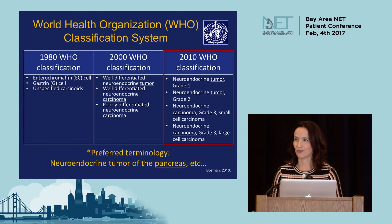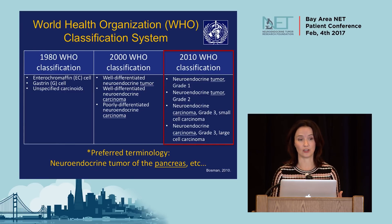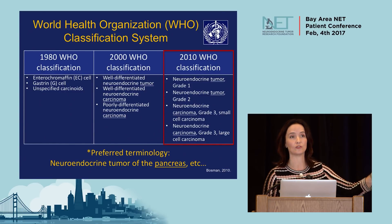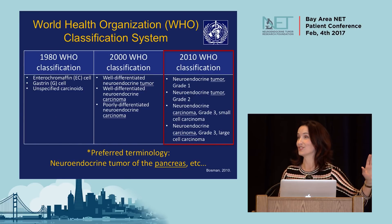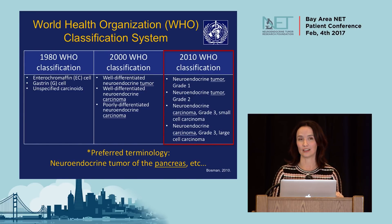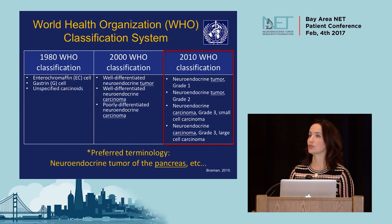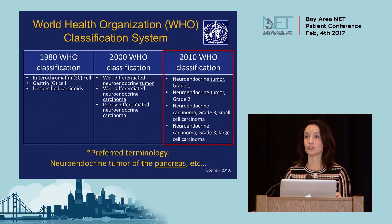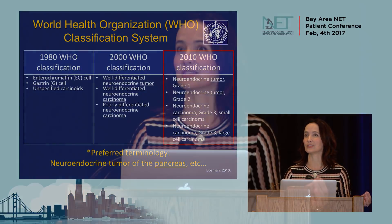The World Health Organization has their own classification system, and this has evolved over the years. The 2010 classification is really what most neuroendocrine experts and pathologists now use. 'Neuroendocrine tumor' is the preferred terminology, followed by the primary site — for example, neuroendocrine tumor of the pancreas or of the lung. They fall into three grades: grade one, grade two, and grade three, which we'll discuss in just a moment.